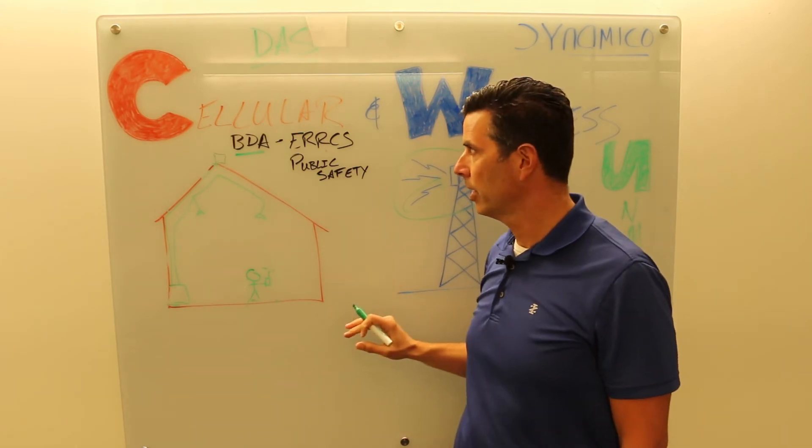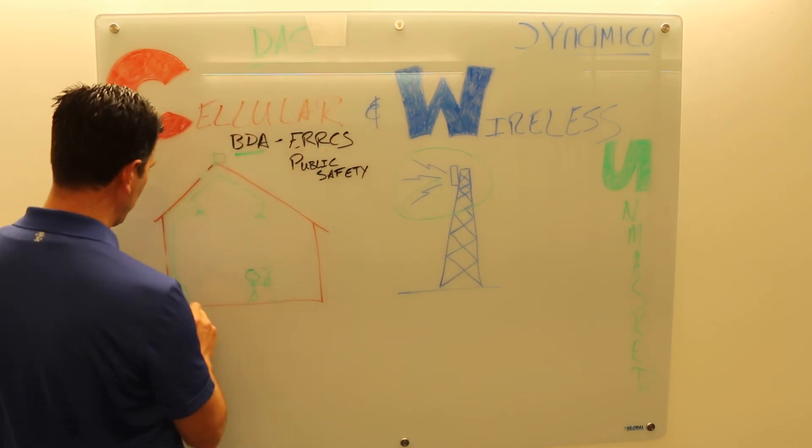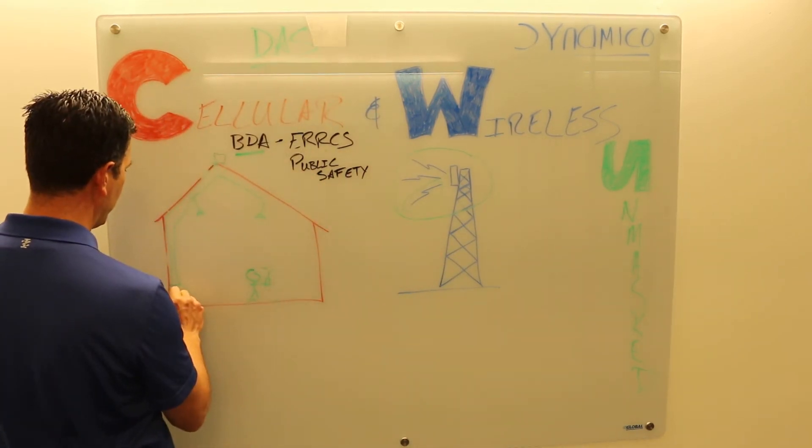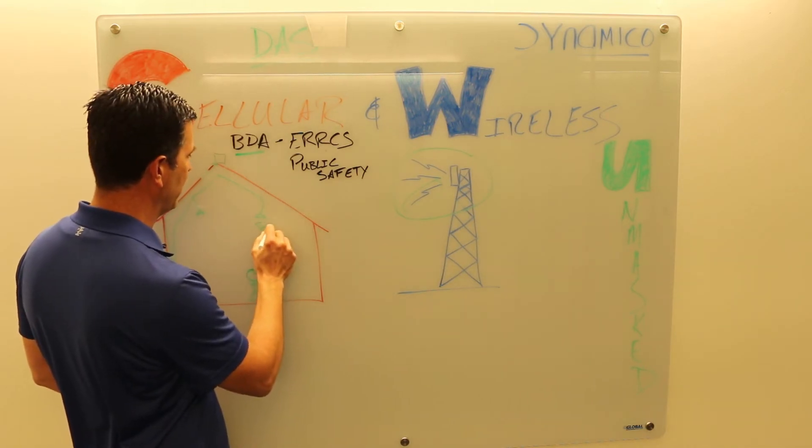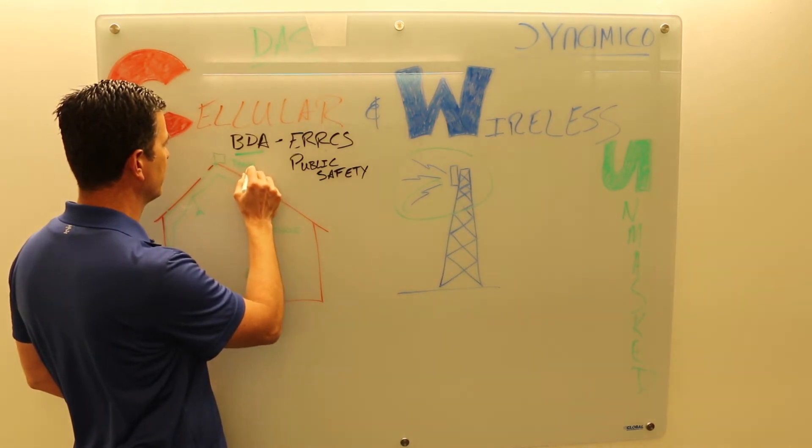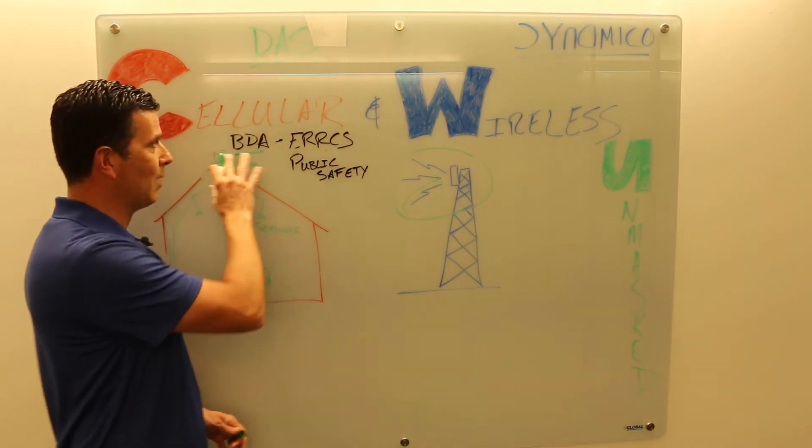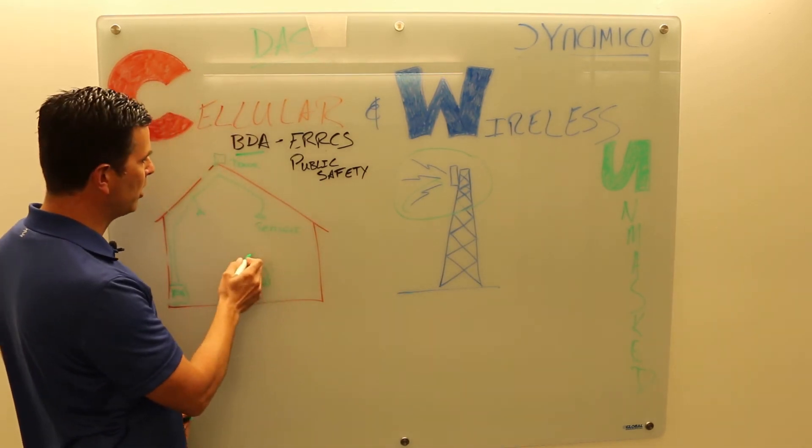What I mean by bi-directional amplifiers, I mean in a system for a building you've got your BDA at some location inside the building, you've got service antennas in the building, and you've got a donor antenna on the roof. What the amplifier does, it's bi-directional.